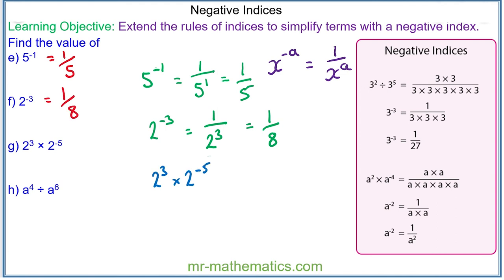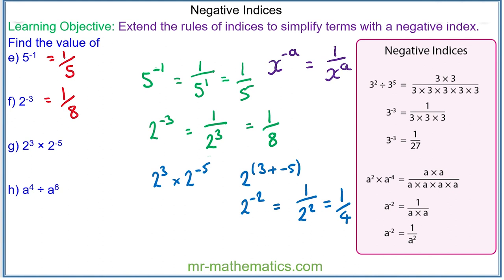We need to simplify the expression using the multiplication rule, where we add the two powers. So we have 2 to the power of 3 add negative 5. 3 add negative 5 is negative 2, so we have 2 to the power of negative 2. The negative power means this is 1 over 2 squared, and 2 squared is 4, so it simplifies to make 1 quarter.